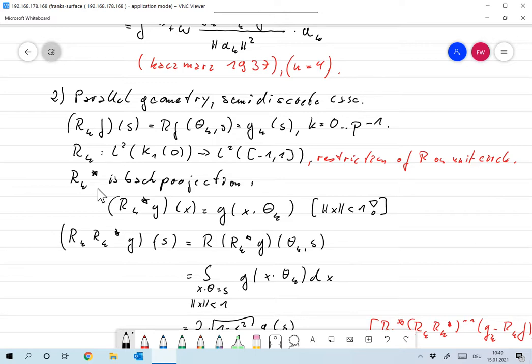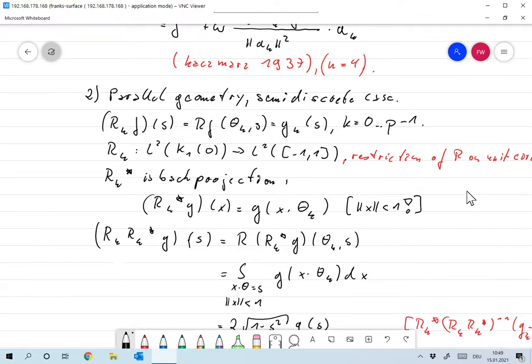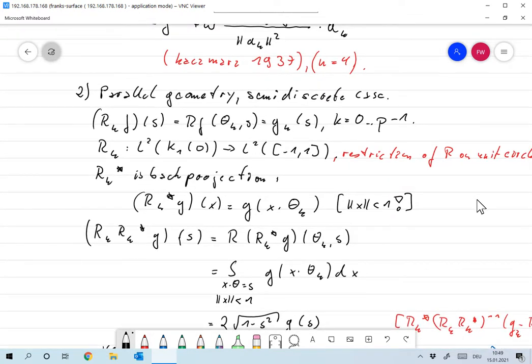Then Rk adjoint. Rk is the Radon transform. So Rk adjoint must be the back projection. And it's the back projection along one single line. That is immediately shown: Rk star applied to some function G of x is G of x times theta K. And that's exactly what we had in the continuous case for all directions.